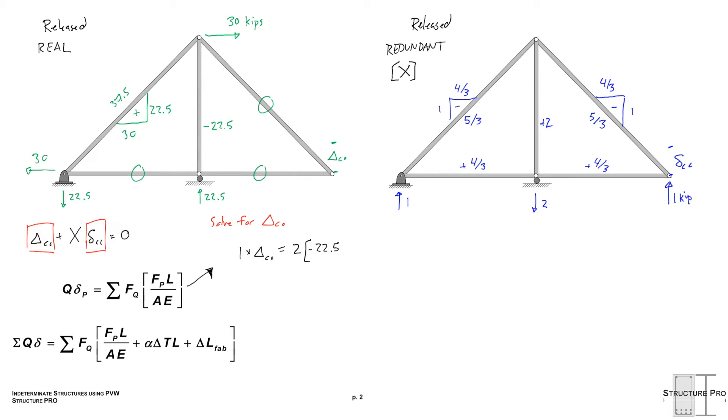So Q delta P, 1 times delta C0. And in this case we just have the two members. So the first member is virtual load of Q times negative 22.5 and that length should be 15 not 18 times 12 over AE plus negative 5 over 3 times the 37.5 real load times 25 times 12 we're converting it to inches there over AE. So we wind up with a delta C0 of 0.448 inches.